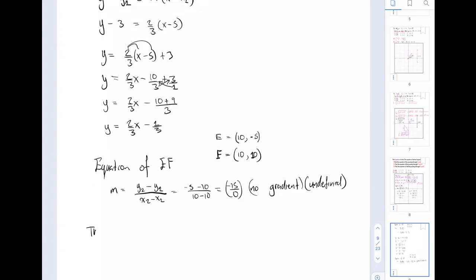The equation of a vertical line is x equals a. Once you can figure out one of the x values, then you will know the equation of that vertical line. Here we see that both of these points have a corresponding x value of 10.